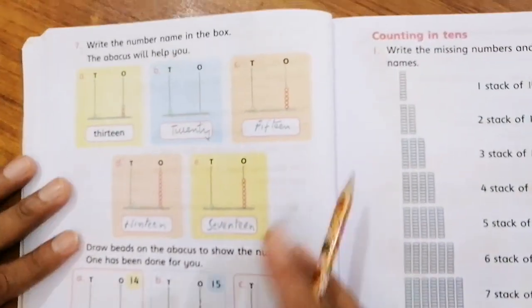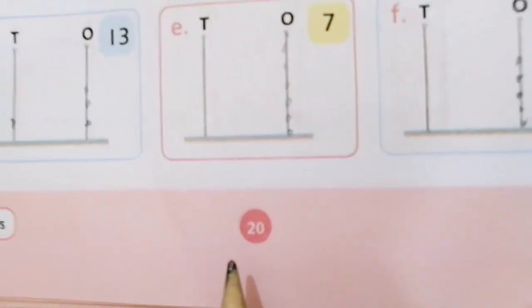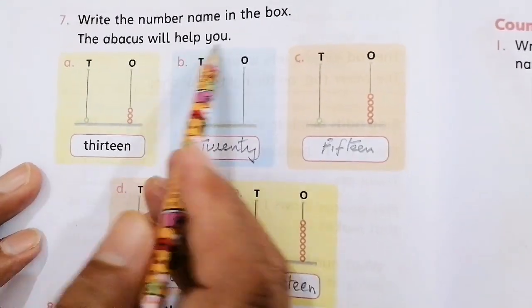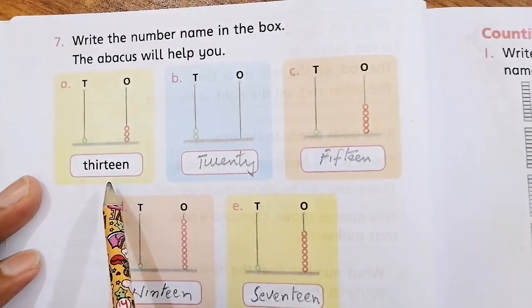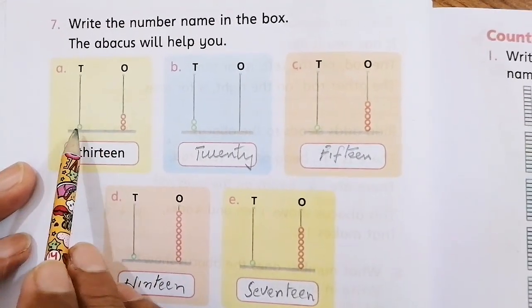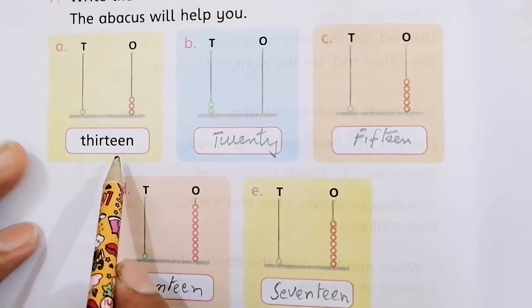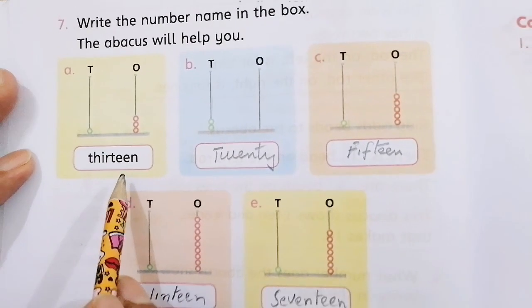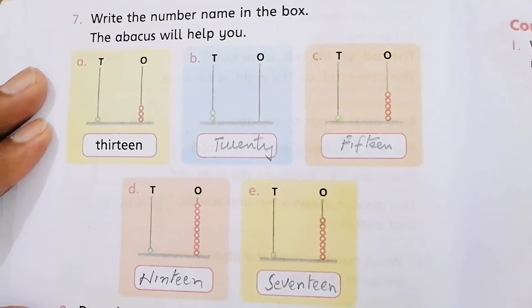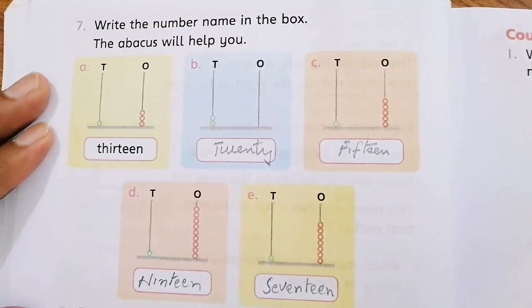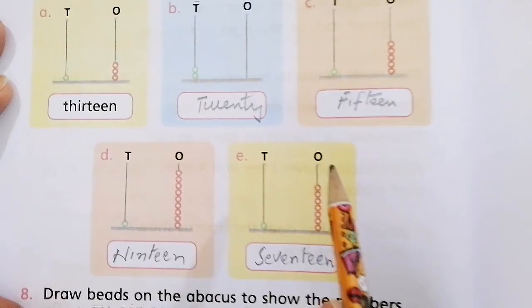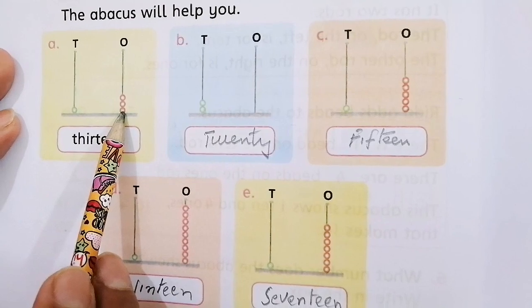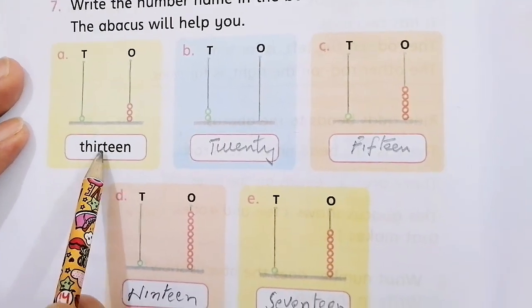Let's move to next page, that is page number 20. So question number 7, write the number name in the box. Abacus will help you. If you have numbers in the abacus, we have to write words. You have to count 1 to 20, because in class 1, the kids are studying 1 to 20. So you have to practice with your mother. In A part, this is solved here. 1 bead here, 3 beads here, and this is 13. You have to write it in words.